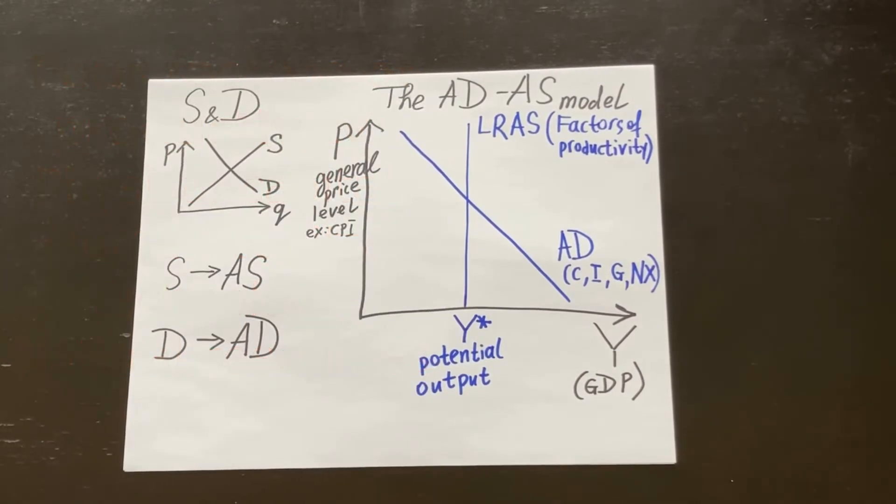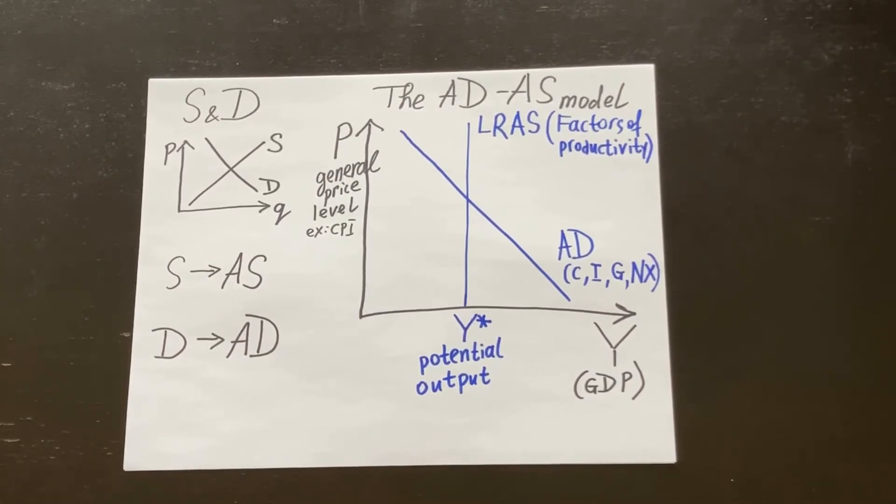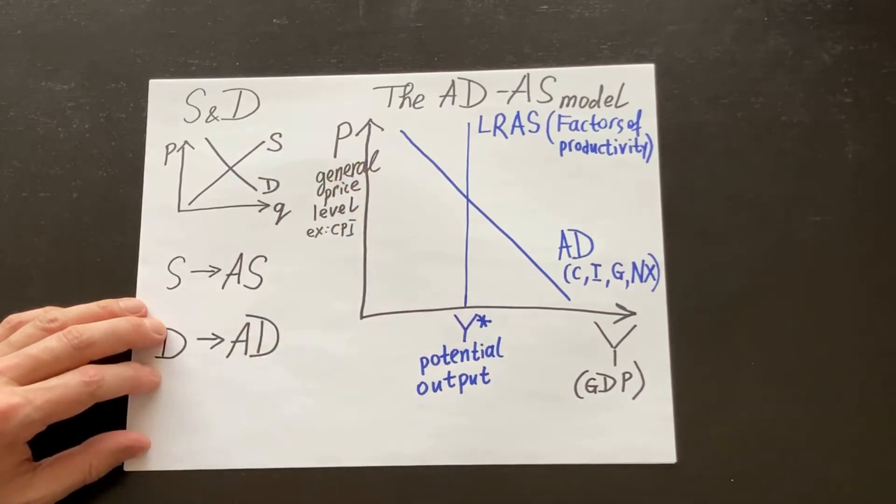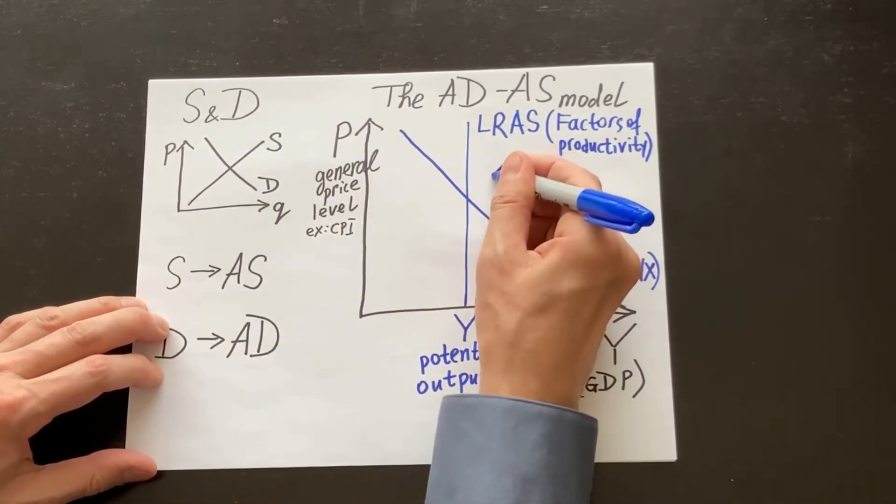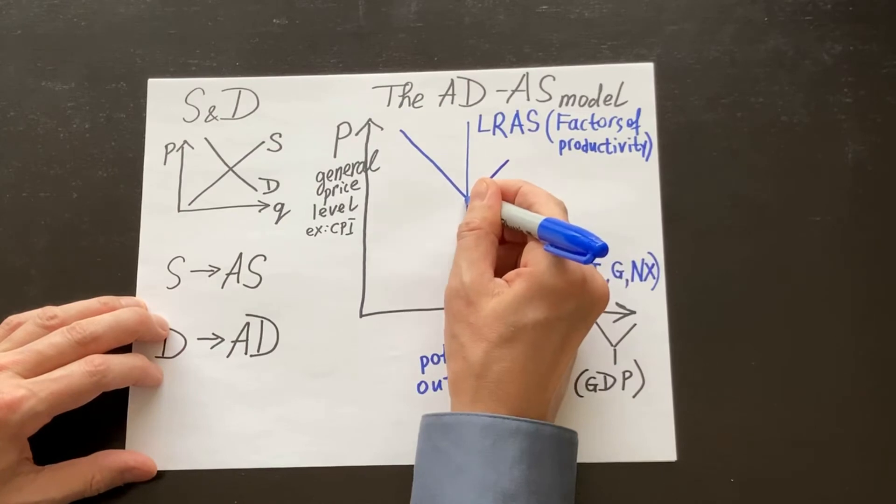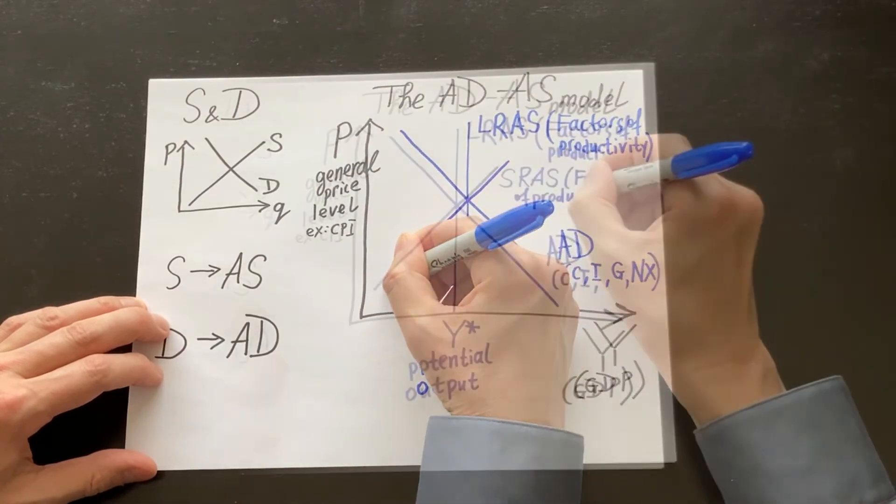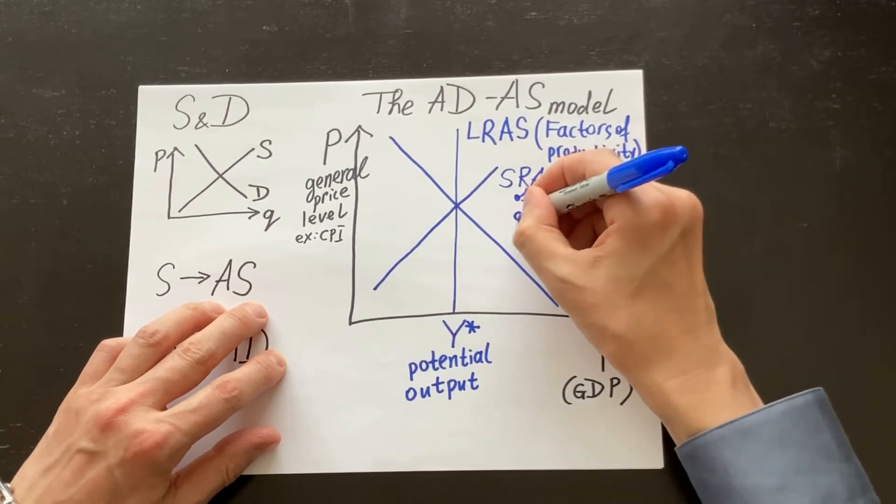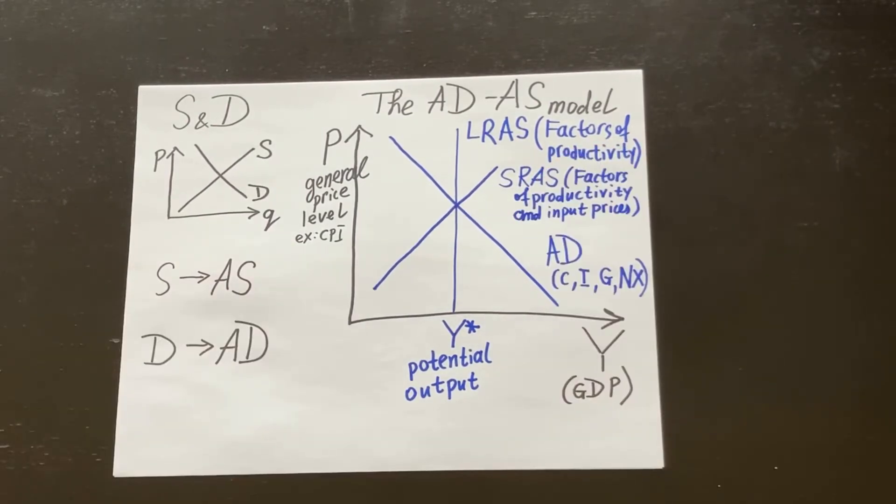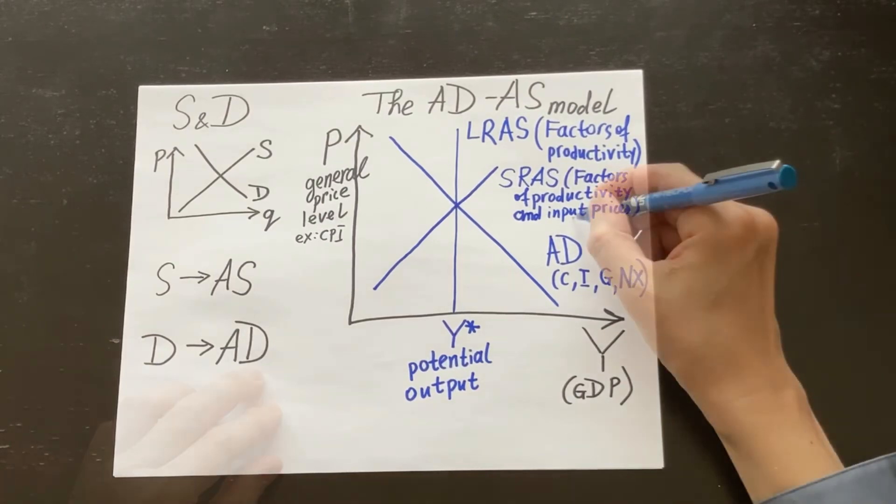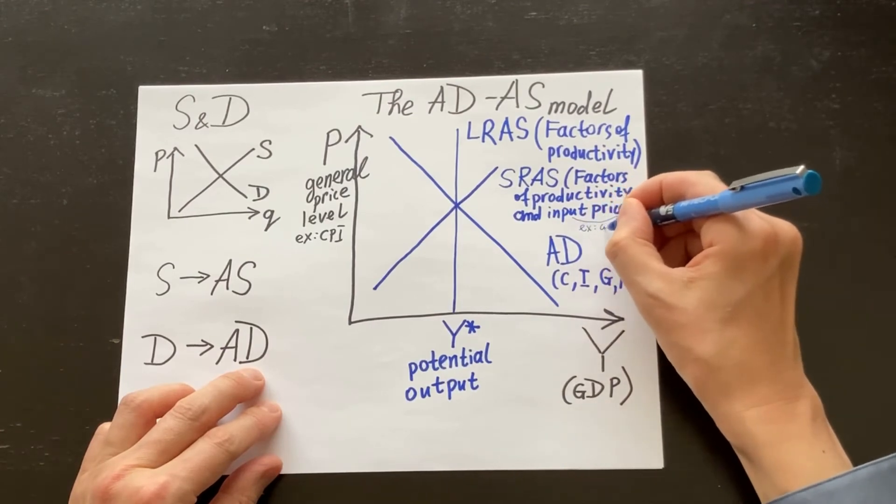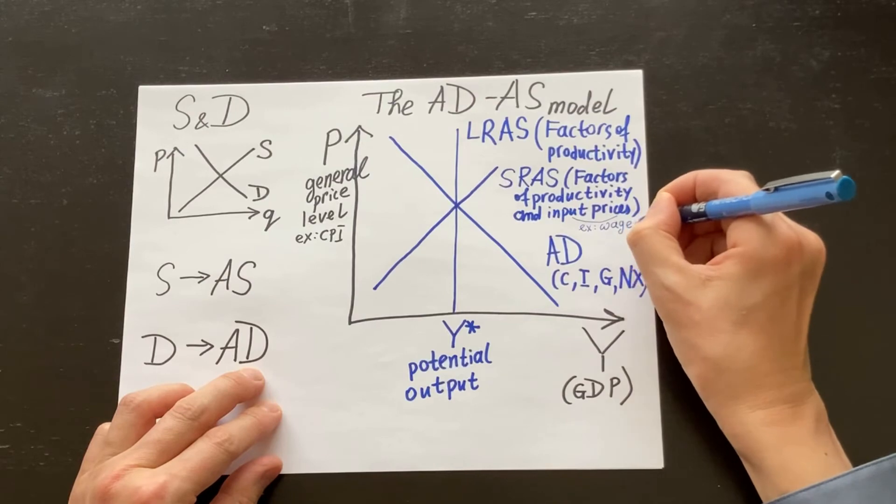The second supply curve is the short-run aggregate supply curve. And just like a normal supply curve slopes upward, the short-run aggregate supply curve also slopes upward. And what's behind the short-run aggregate supply are the same factors of productivity and one more factor: input prices. Prices for production inputs. For example, the price for the most important input labor, which is the wage.